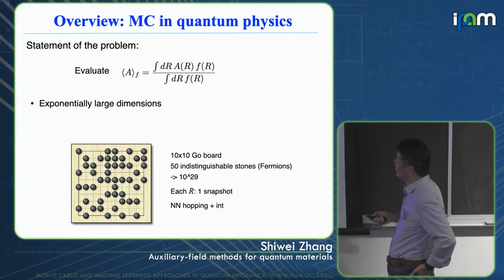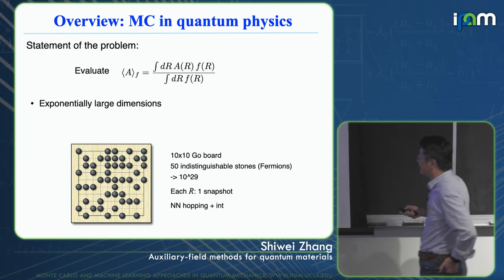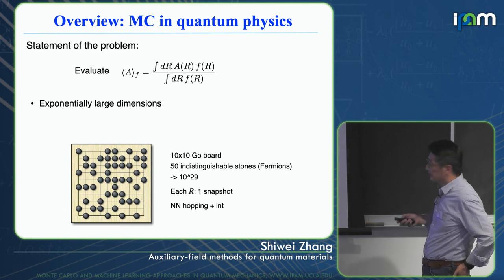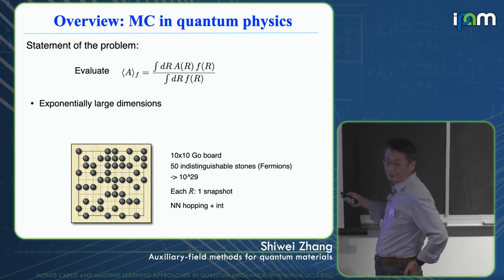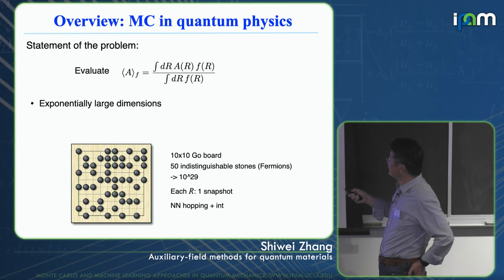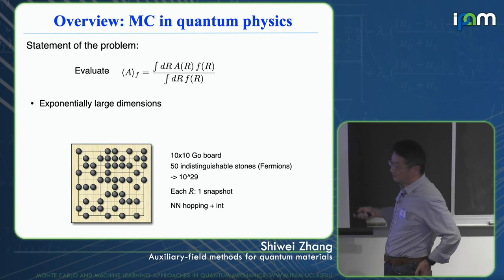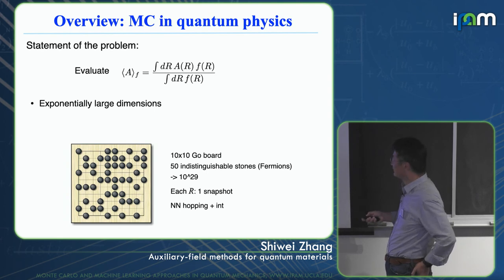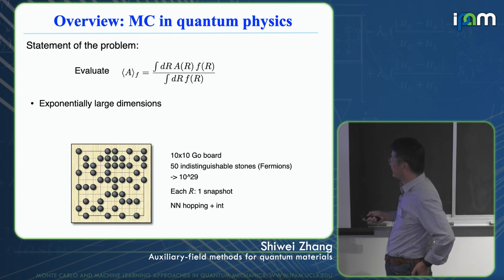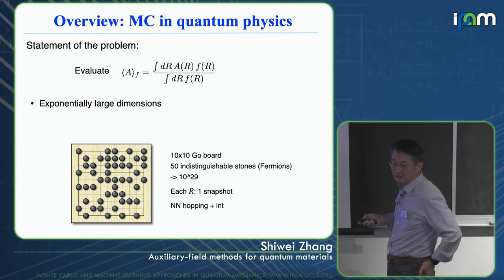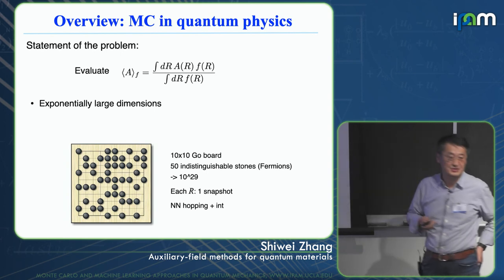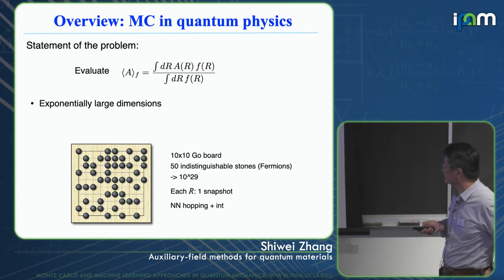For example, if you have fermions that live on a 10-by-10 board, with 50 indistinguishable fermions, then there are 10^29 configurations. Each R, for the next couple of slides, think of it as a snapshot — one picture of this configuration. And if you want to make this quantum, think of these particles as making nearest-neighbor hops — that's the kinetic energy — and they interact through a near-neighbor interaction.